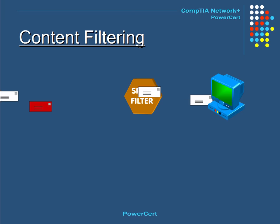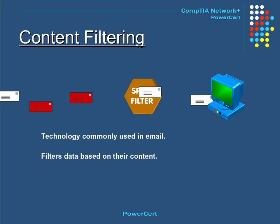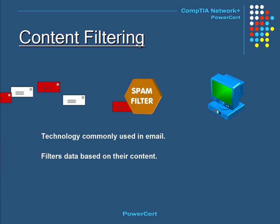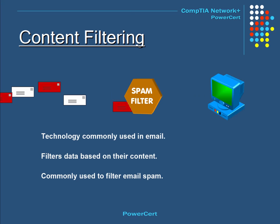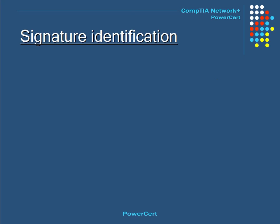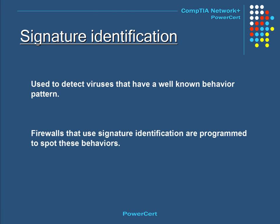Content filtering is a technology commonly used in email. It filters data based on content rather than source and is commonly used to filter email spam. Another type of filter is called signature identification, which is used to detect viruses with well-known behavior patterns. Certain viruses and malware have common behavior, and firewalls using signature identification are programmed to spot this behavior and take action to block the intruder.